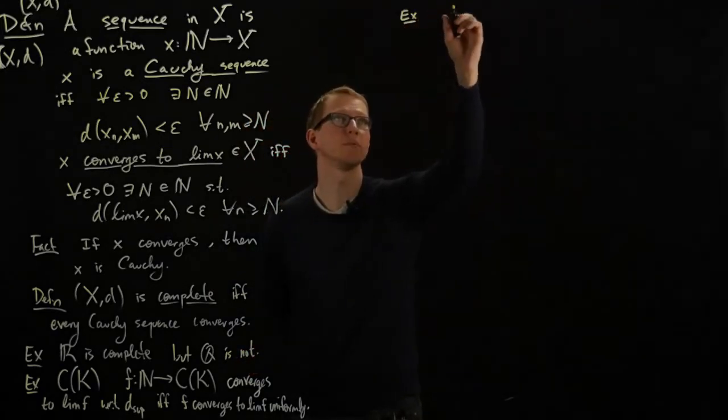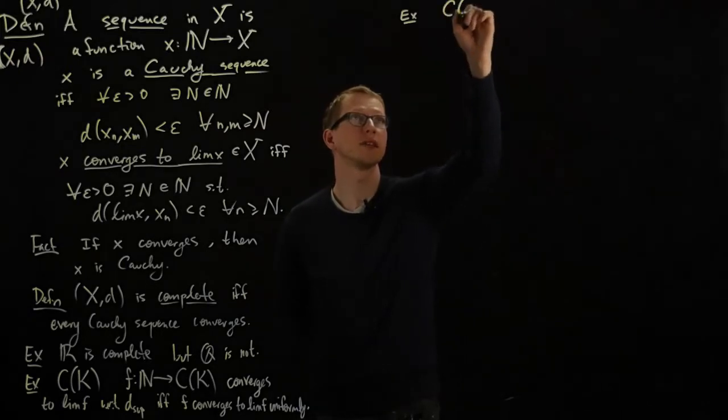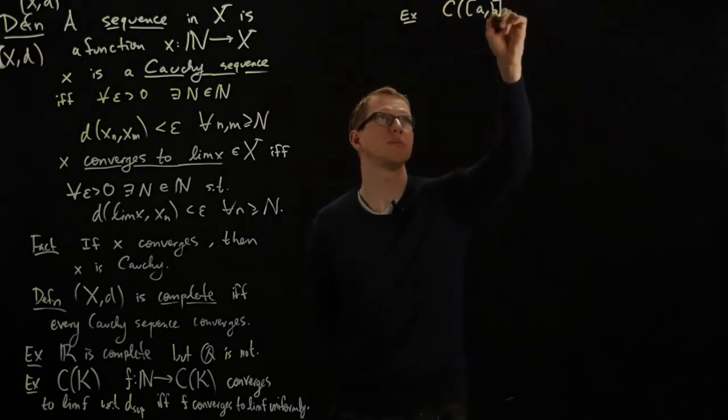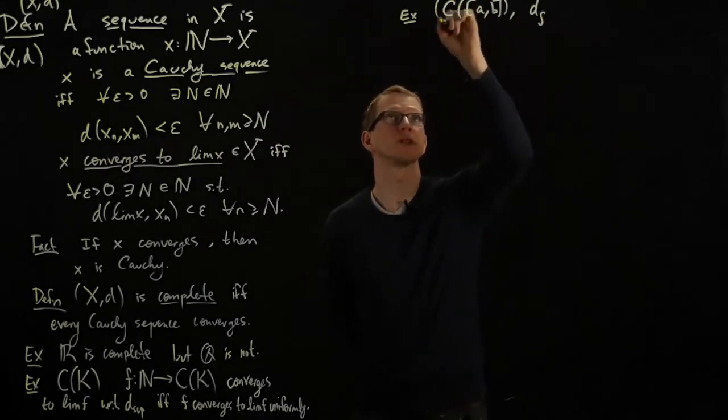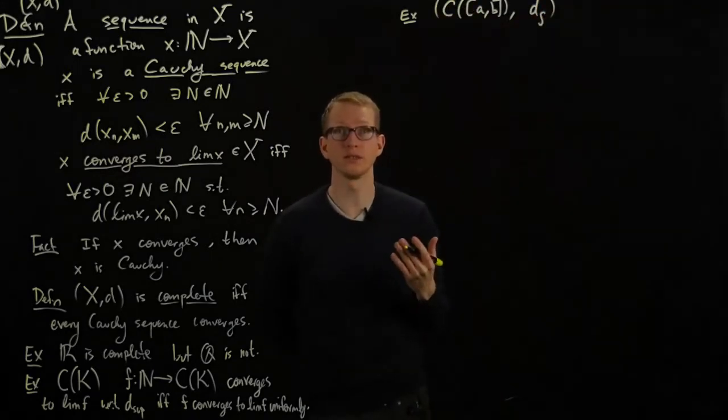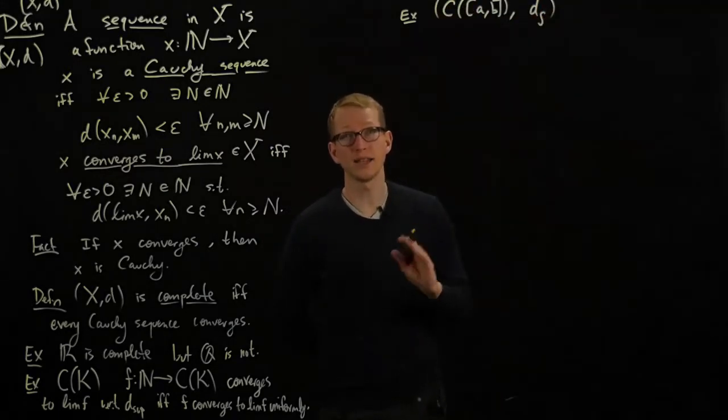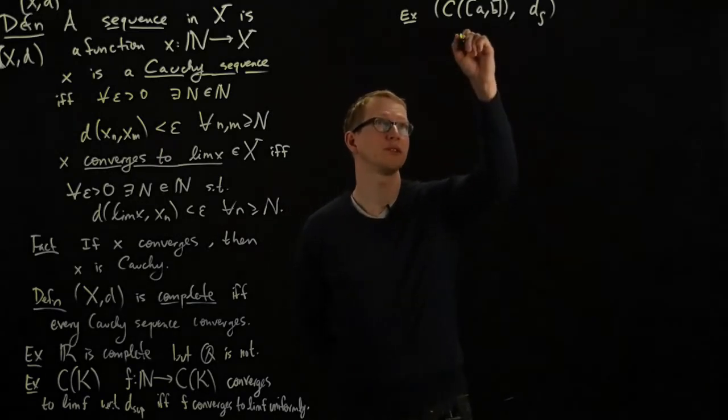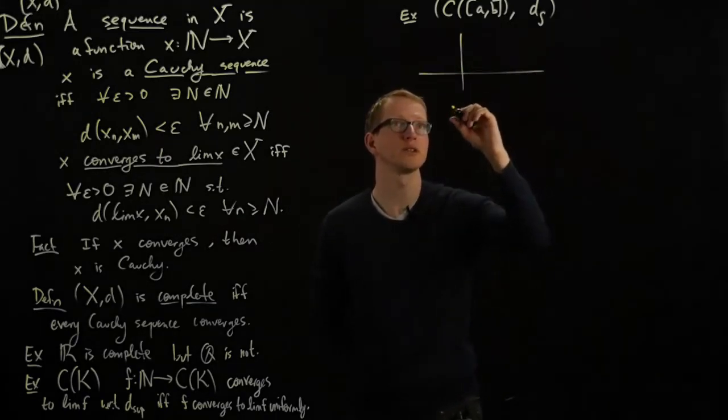A non-example is the set of continuous functions on [a,b] with the integral metric, where you integrate the distances between the functions. This is not complete. One of the reasons is if we take the following sequence of functions...